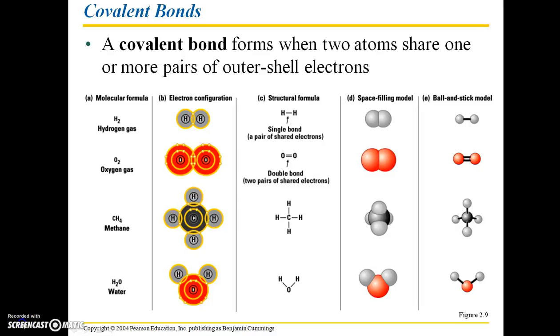Hi students! Picking up where I left off with chapter 2, we have covalent bonds. So a covalent bond forms when two atoms share one or more pairs of outer shell electrons.